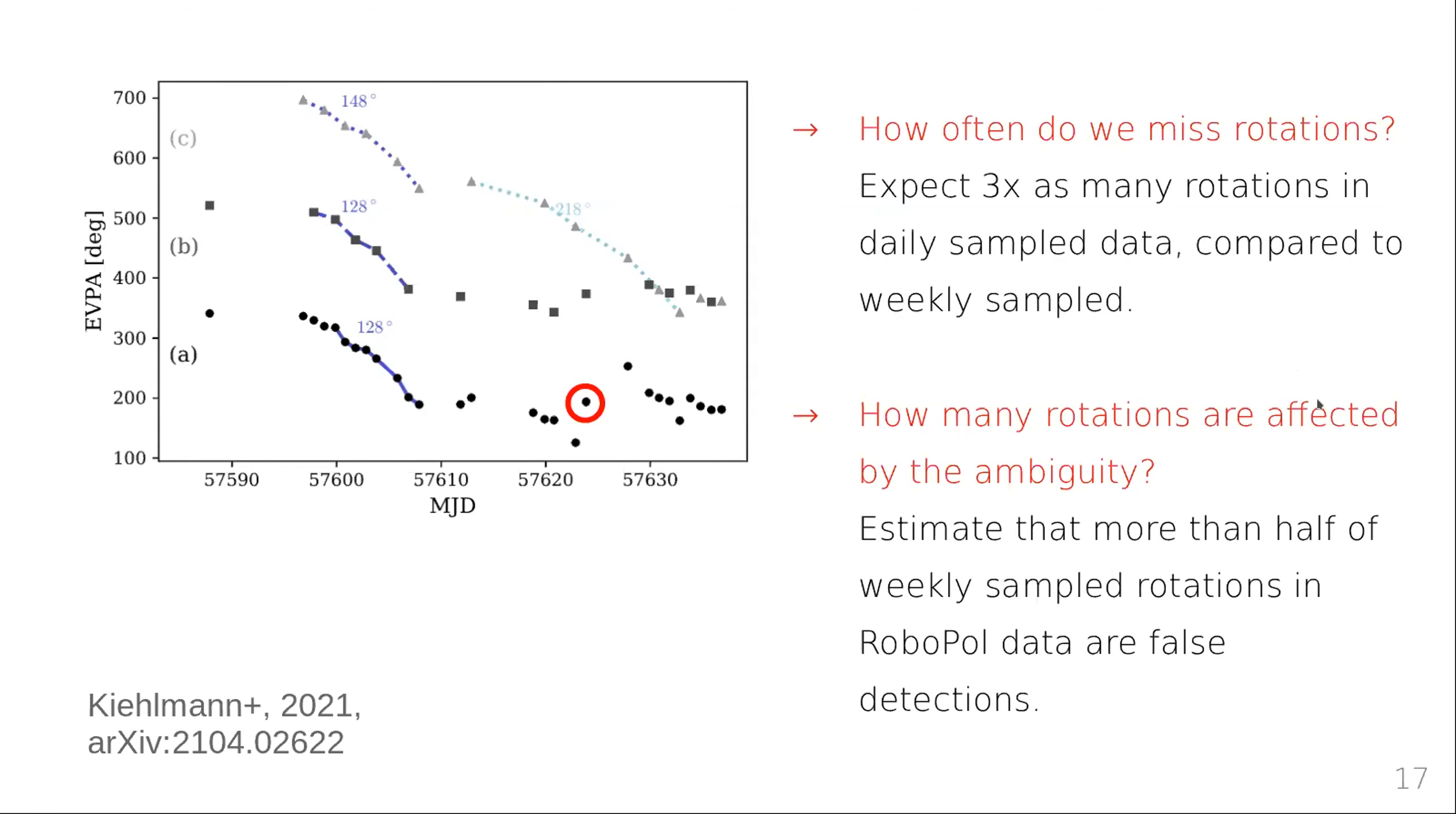We also asked the question, how many rotations are affected by the ambiguity? For instance, had we detected this as a rotation, we could ask, does it really reflect reality or is it affected at some point by the ambiguity? As indeed it is. We developed a method to estimate how likely it is that those identified rotations are measured correctly or incorrectly, and we estimated that probably more than half of the rotations we identified in our main campaign are most likely false detections.